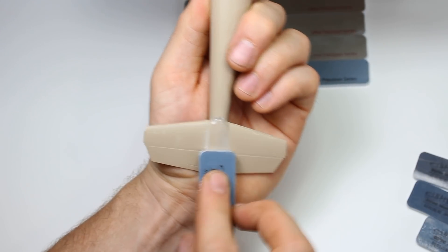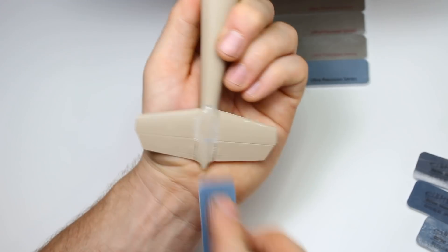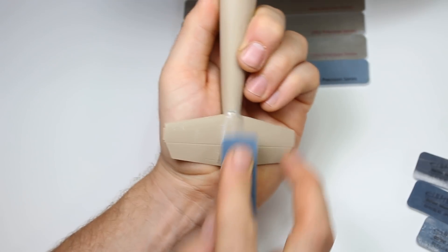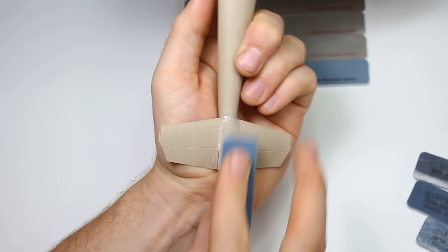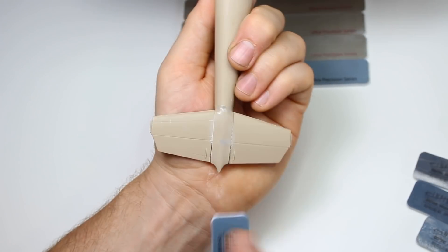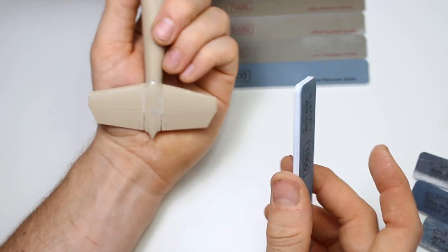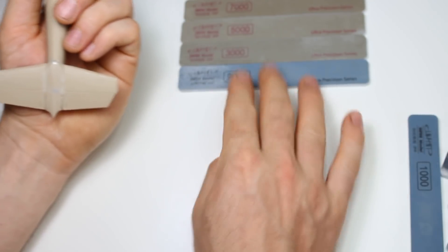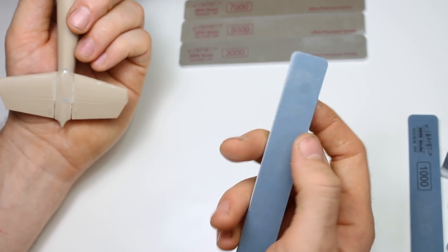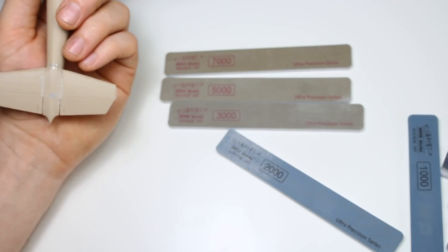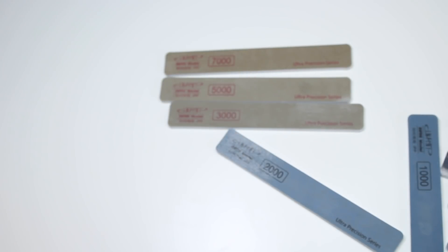That's another thing. Sanding sticks obviously do change the more you use them. I actually prefer them once you've broken them in, as it were. They then tend to not really perform as their grit numbers would tell you. You get a feel for it. You know when you need a 1000, you know when you need a different number.